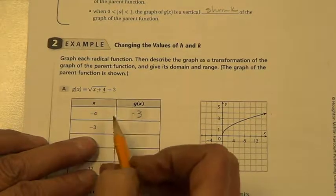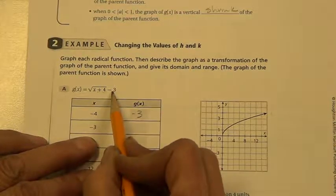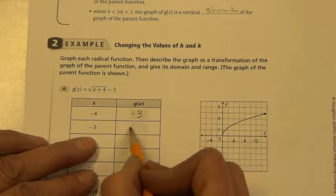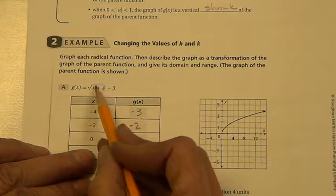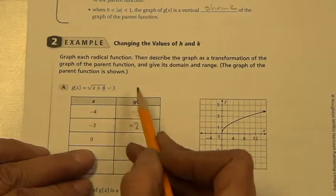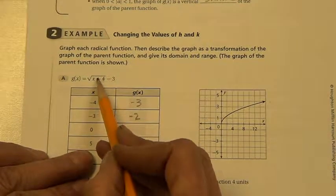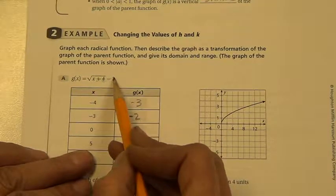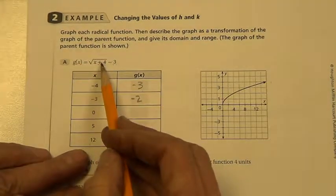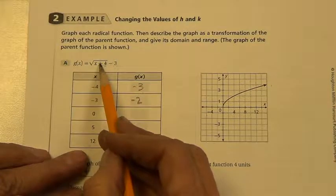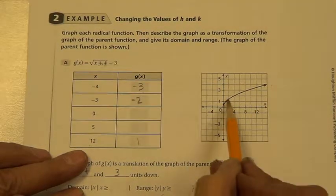0 plus 4 would be 4. Square root of 4 is 2. Minus 3 is negative 1. 5 plus 4 would be 9. Square root of 9 is 3. 3 minus 3 is 0. And then 12 plus 4 is 16. Square root of 16 is 4. 4 minus 3 is 1. Now you need to take all of these points and plot it over here.